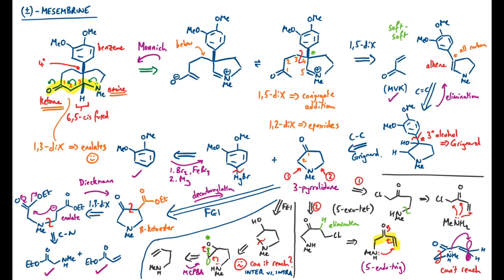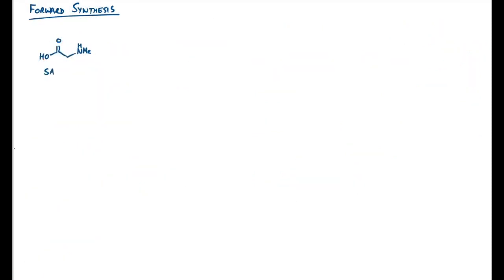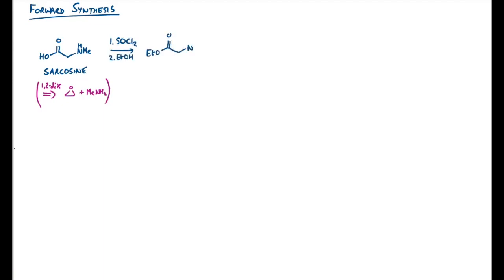So my retrosynthesis took a bit of a ramble — I'll tie it together by discussing the forward synthesis. My super cheap starting material is this amine, known as sarcosine — it's just a byproduct of metabolism. If you hadn't come across it, you could do a 1,2 disconnection back to an epoxide and methylamine with some redox chemistry. Firstly, we need to make the ester: standard easy conditions would be to use thionyl chloride then ethanol — that saves carrying around the carboxylic acid, which can be a real pain. Next, I'd like the amine to do conjugate addition, so I'll give it ethyl acrylate. We just need thermodynamic control to favour 1,4-addition. This is pretty favourable because that terminal site is really unhindered. An unfavourable 1,2-addition might lead to an amide, but we could swap the ethyl ester to a t-butyl ester if we were really having trouble, which would prevent direct attack entirely.